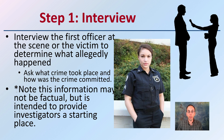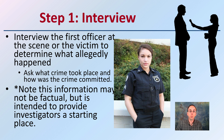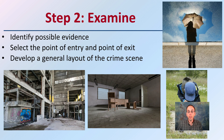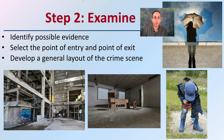Step one is interview. We want to interview the first officer at the scene or the victim to determine what allegedly might have happened — asking what the crime took place and how the crime was committed. Note that this information may not be factual, but it's intended to provide the investigator a starting place. It doesn't mean you take their word as 100% correct, but it does allow you to have a starting point that can help lead the examination phase, identifying possible evidence, selecting a point of entry and exit, and developing a general layout of the crime scene.